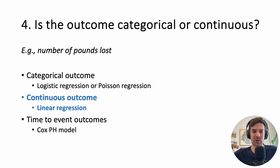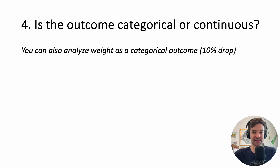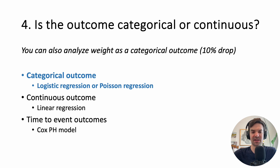A quick example: if the outcome is number of pounds lost, that's a continuous variable, so you'd use linear regression. You can also analyze weight as a categorical outcome — for instance, what percentage of people lost at least 10% of their body weight? That becomes a yes/no variable, a categorical variable, and logistic regression would likely be the right choice.